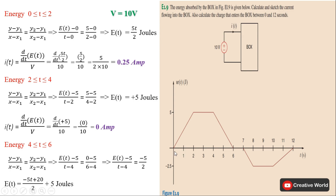For the time interval 0 to 2, our initial points are (0, 0) and our final points are x₂ = 2 and y₂ = 5. Putting these values into the equation — y₂ is 5 minus y₁ of 0, x₂ is 2 minus x₁ of 0 — and solving by cross multiplication, we get E(t) = 5t/2. Taking its derivative and dividing by voltage 10, we get 0.25 ampere for the time interval 0 to 2.